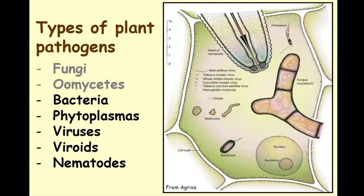I have this picture taken from a wonderful text by Agrios on plant pathology that illustrates a microscopic view of a plant cell — that rectangular-shaped structure in the background — compared to the various types of organisms that can be pathogens of plants. On the left-hand side you see a list, and I have in gray font the fungi and oomycetes because they tend to historically have been grouped together as fungi, and yet they're different groups that are closely related but not the same.